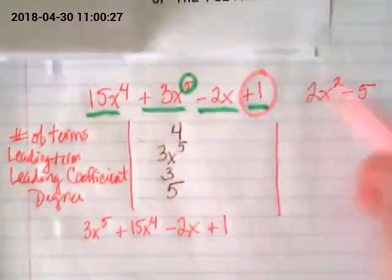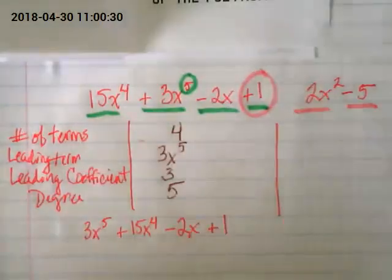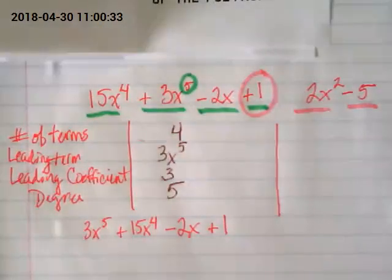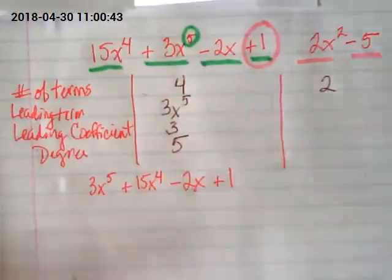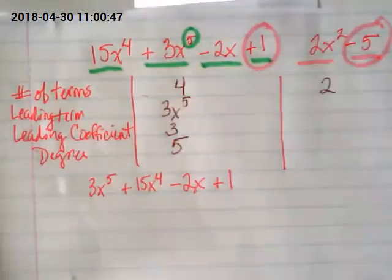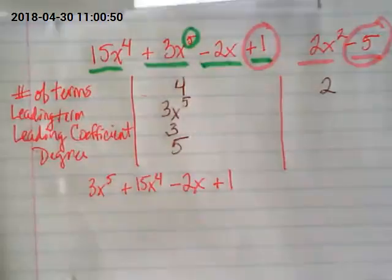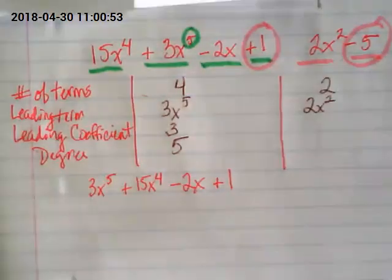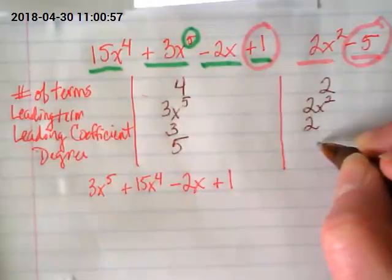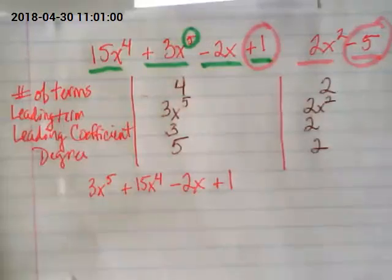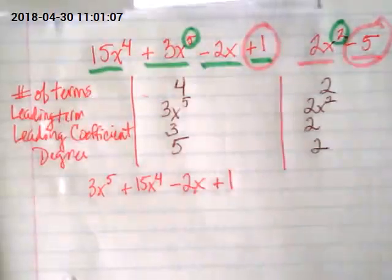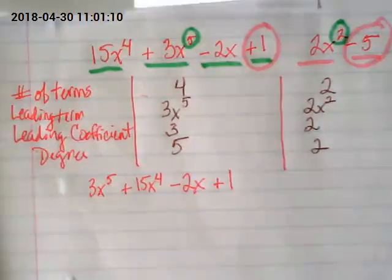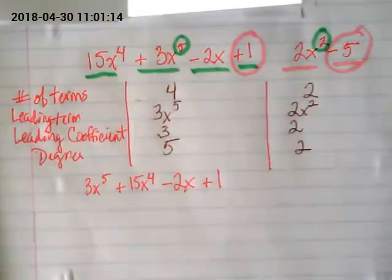How many terms in this one? 2. Why do you circle the 1? Because it's the constant. Yeah, Mike. And remember we said we were going to circle the constant when we did this? Yes. Okay. What's the constant here? Negative 5. Negative 5. So we're going to circle the whole thing. What's our leading term? 2x squared.